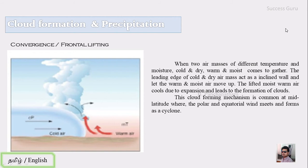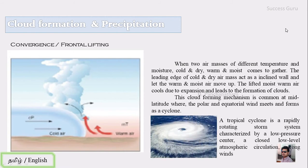This cloud formation mechanism is common at mid-latitudes where polar and equatorial winds meet. The polar wind is cold and dry, while the equatorial wind is warm and moist. These two meet at mid-latitudes, leading to the formation of cyclones. A tropical cyclone is a rapidly rotating storm system characterized by a low-pressure center, close lower-level atmospheric circulation, and strong winds. This is the reason for cyclone formation when two different air masses meet.